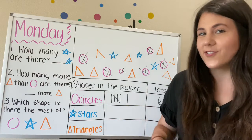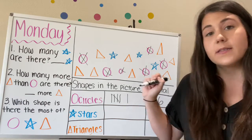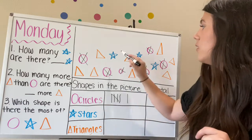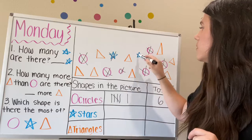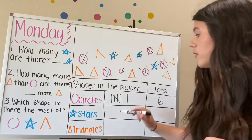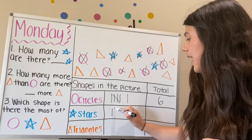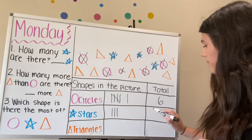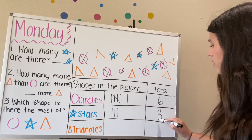Now we're going to count the stars. So let's cross them out as we count together. Ready? One, two, three. Three stars. So we're going to show that with three tally marks, and then the number over here.